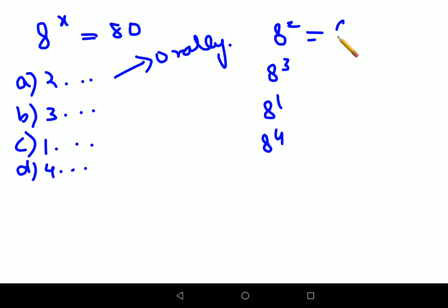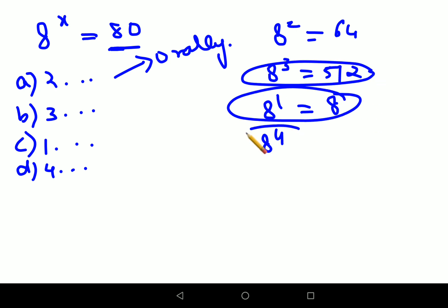So 8 raised to 2 gets you 64. This gets you 512. 8 raised to 1 is 8. Now please understand you need the value of 8 which is closest to 80, but it cannot be greater than 80. So this gets canceled, this gets canceled. Obviously this will also get canceled. All you're left with is just 2.